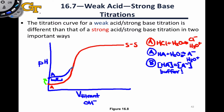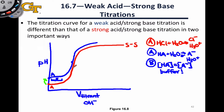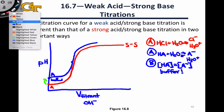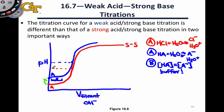As we move toward the equivalence point, the pH continues to increase and eventually levels off. At the point where the curve turns over, we reach the equivalence point. A critical distinction from the strong/strong titration is that the pH at the equivalence point is higher — you can see that the blue curve's equivalence point pH is higher on the y-axis than that of the red curve for the strong/strong titration.